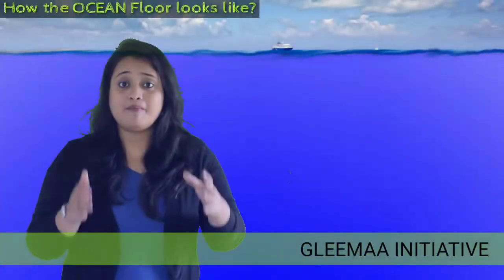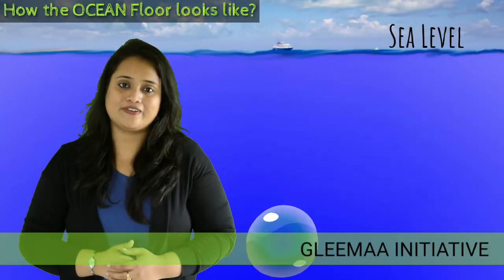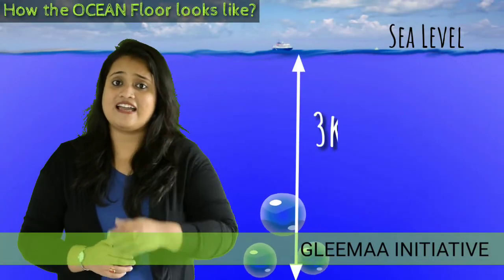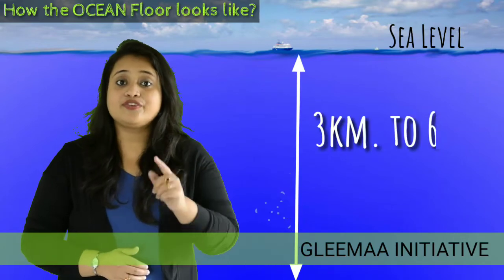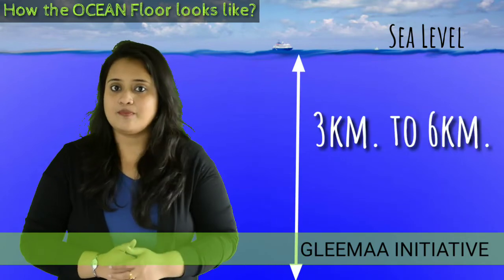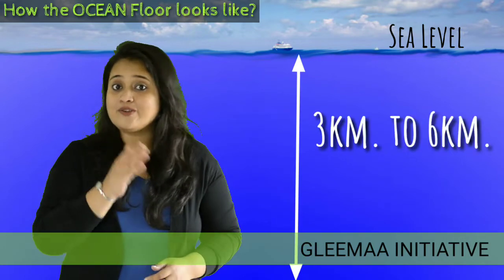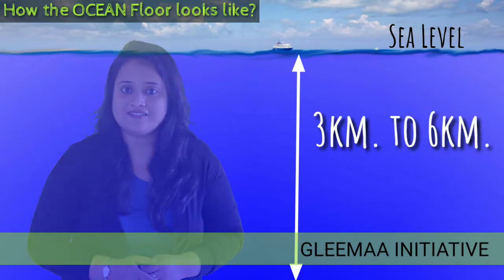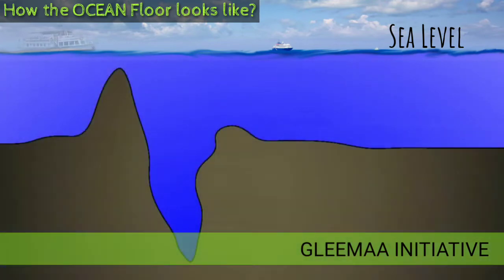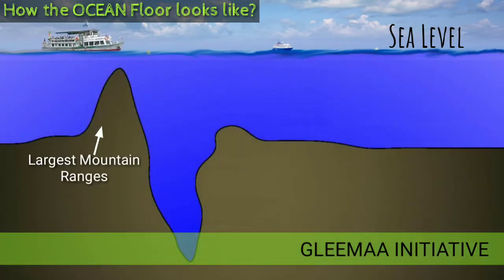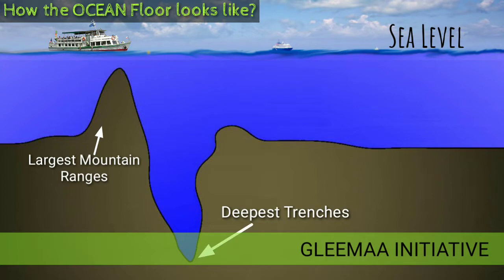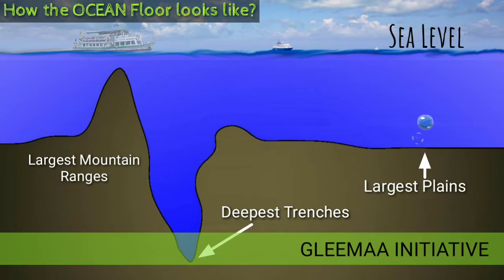The major portion of the ocean floor lies within 3 to 6 km below the surface. The ocean floor erupts with the world's largest mountain ranges, deepest ranges, and largest plains.